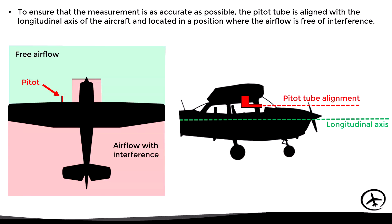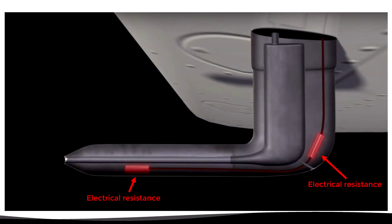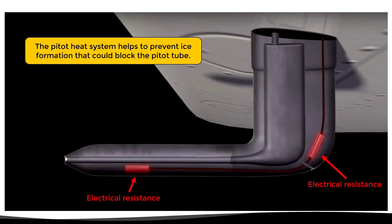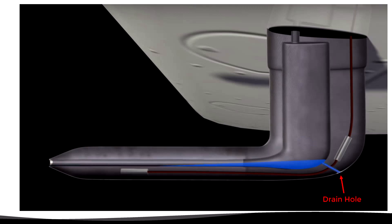A problem with this design is that, being an object exposed to airflow, the pitot tube is susceptible to icing, which can block the main intake hole and produce errors in pressure measurement. To solve this problem, the pitot tube incorporates a heating system consisting of electrical resistances that, when turned on from the cockpit, make the tube heat up and melt any ice that may clog it. The switch for this heating system is usually marked as pitot heat and is located near the light switches.